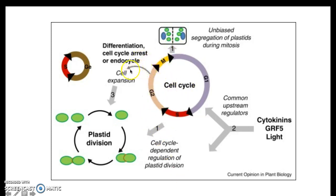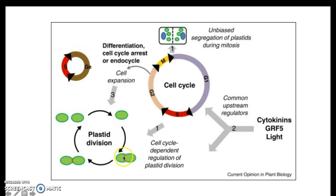Here is differentiation, cell cycle arrest, or the endocycle. As the cell expands and gets ready to divide, plastid division is a little different. Here you have the endocycle, growth, and DNA replication. Here is the mother plastid — it duplicates, very similar to binary fission like what bacteria do. Now you have two individual plastids where you used to have one. The genome duplicates, the membranes unzip, and you have two.